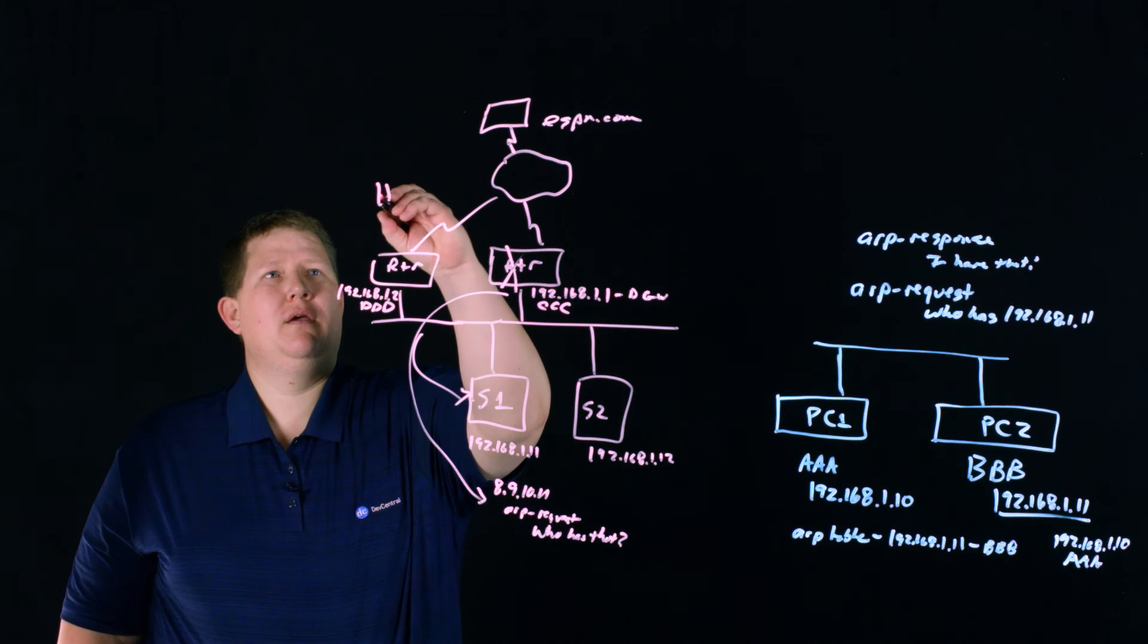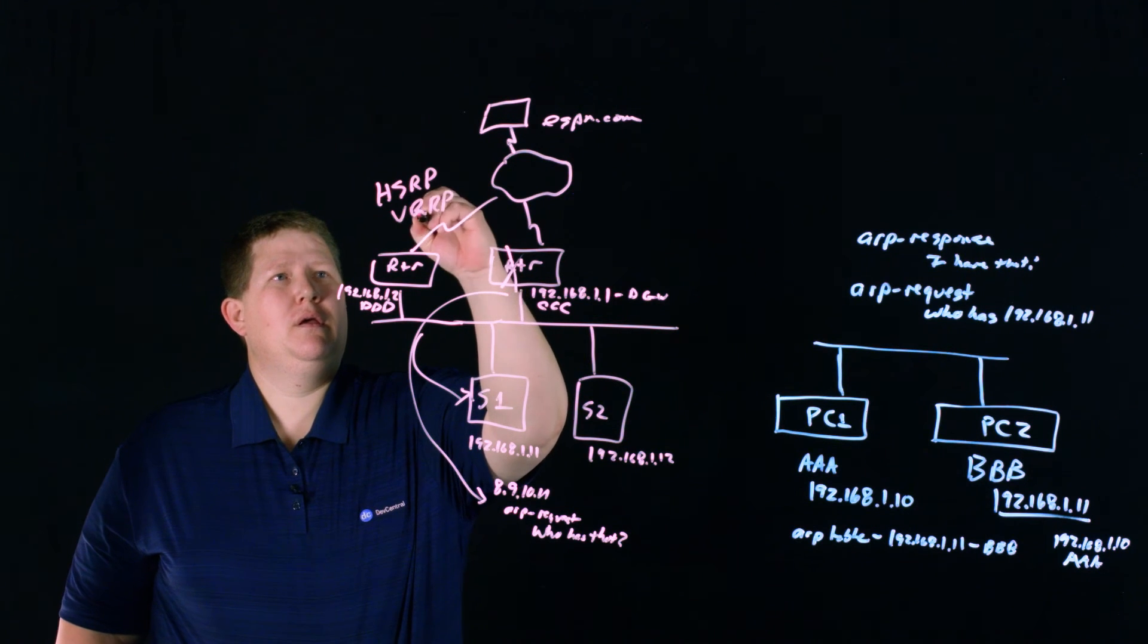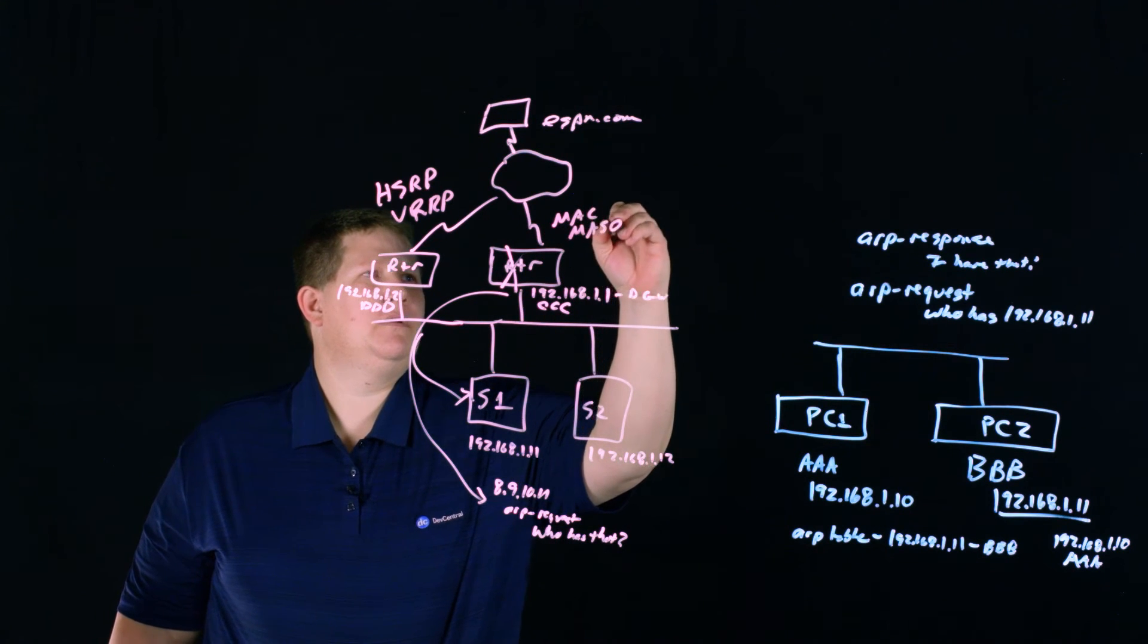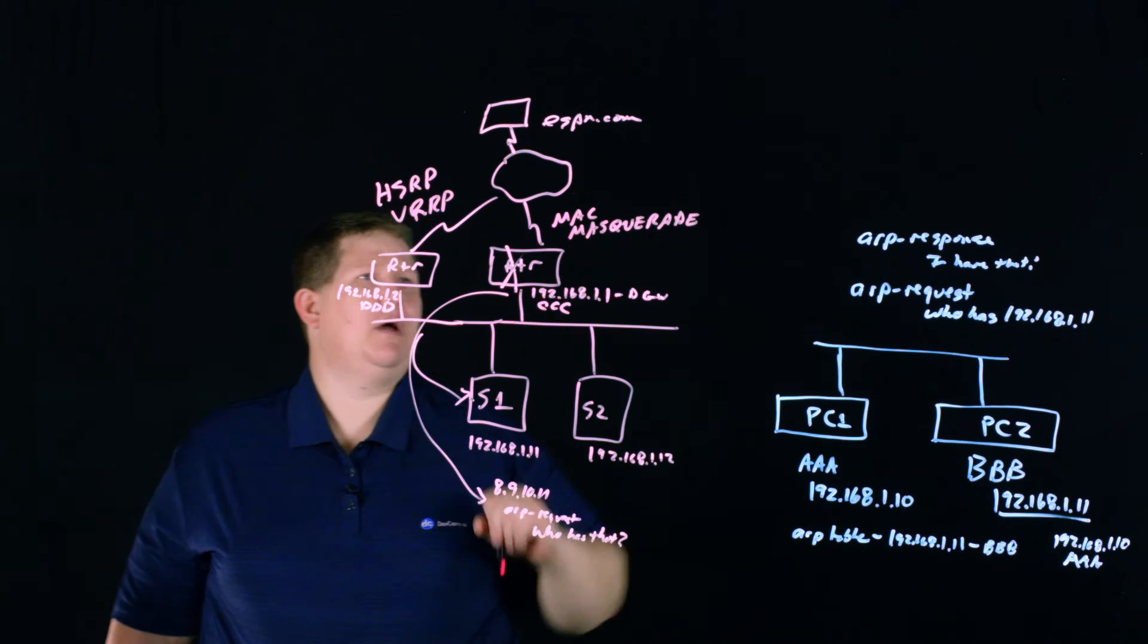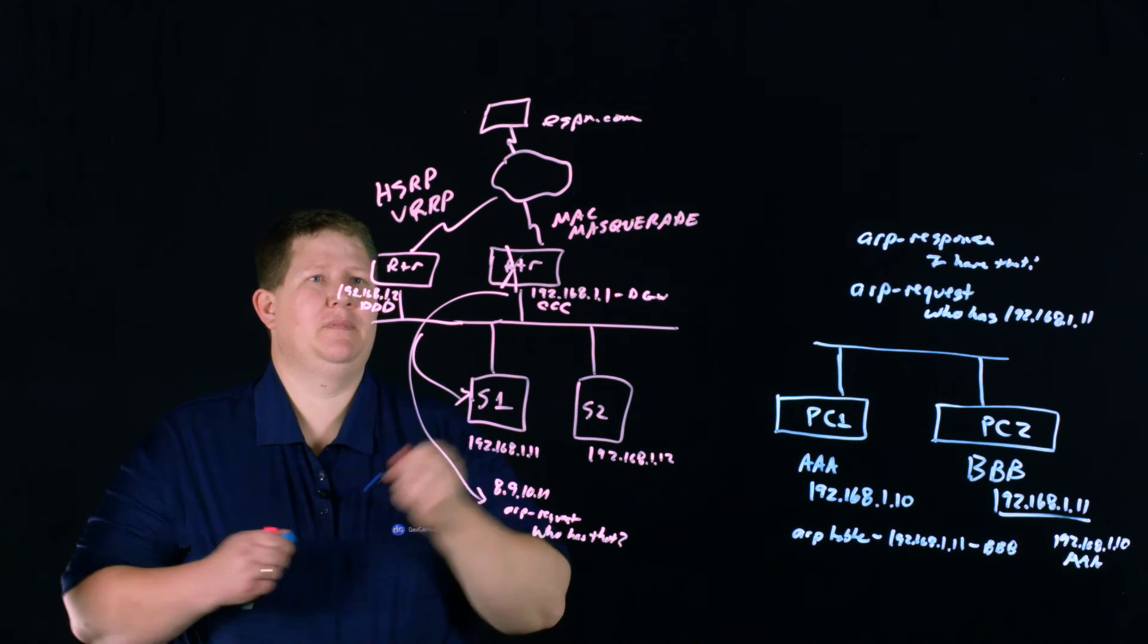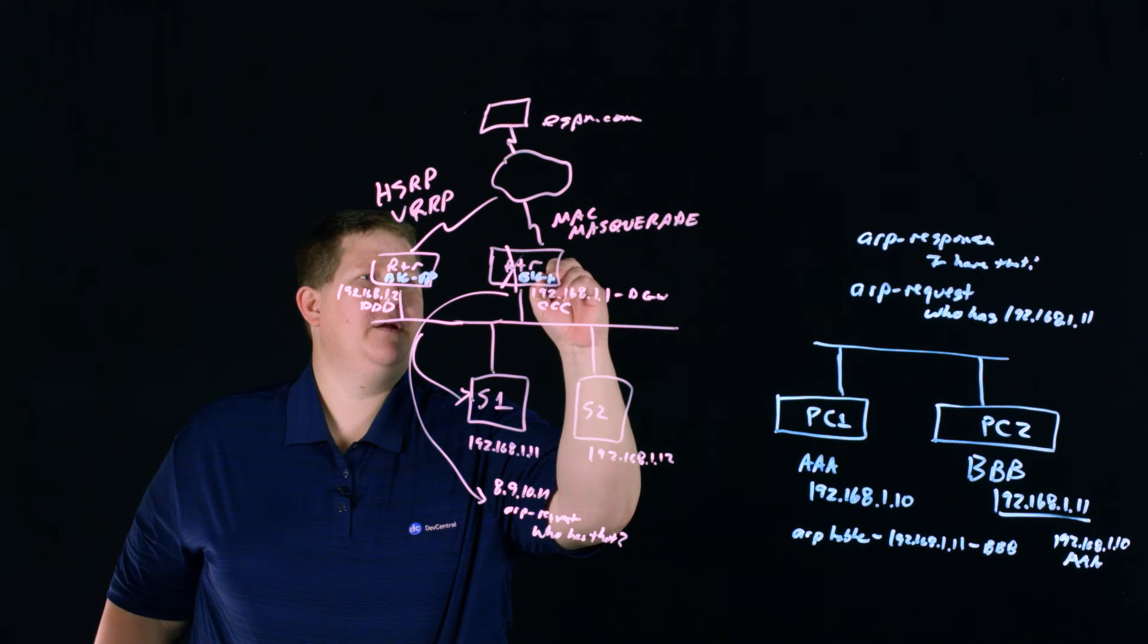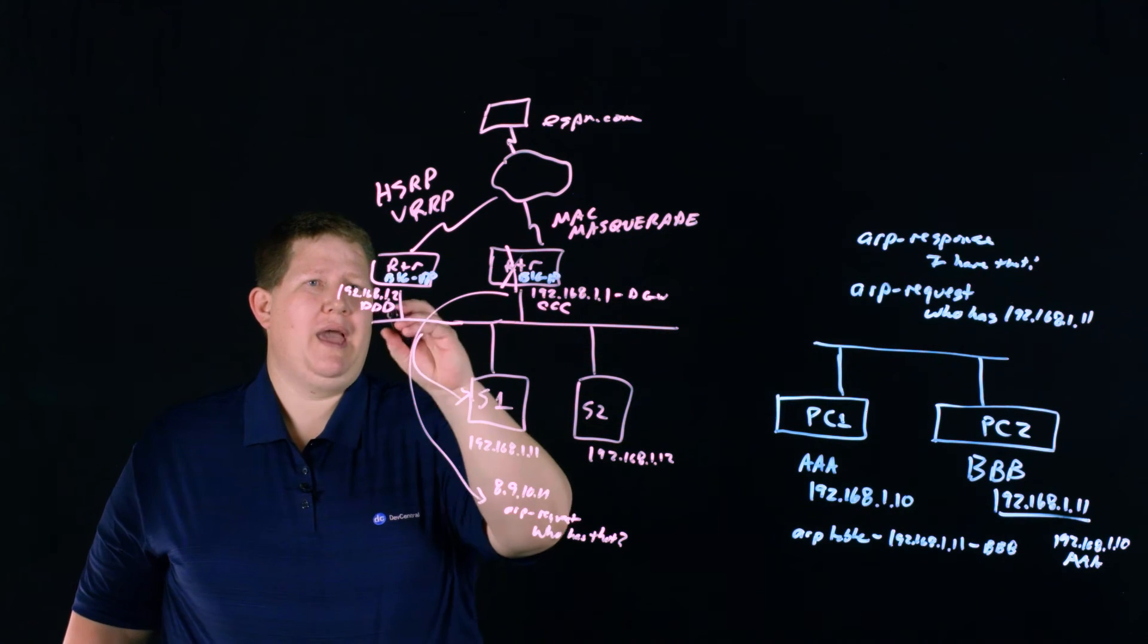And this is where protocols like HSRP, VRRP, and, you know, F5's MAC Masquerade configuration. Can I spell that right? I don't know. But the big IP. So if we make these big IPs, so this routing function is a big IP here, and a big IP here.